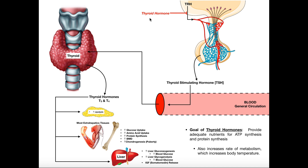Thyroid hormones are obviously made by the thyroid, but how does the thyroid make them? The hypothalamus makes hypothalamic hormones, and one of those is TRH — thyrotropin-releasing hormone. The hypothalamus generates this and puts it into the hypothalamic-hypophyseal portal system. That TRH then travels down into the anterior pituitary gland, where it stimulates the anterior pituitary to generate thyroid stimulating hormone, abbreviated TSH.